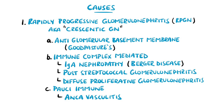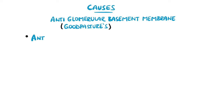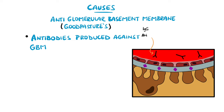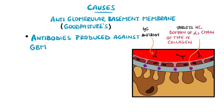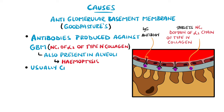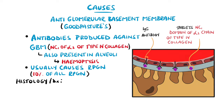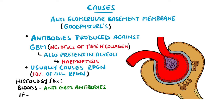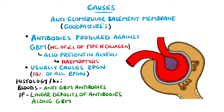In anti-glomerular basement membrane disease, also known as Goodpasture's disease, antibodies are produced that target the glomerular basement membrane — specifically the NC1 domain of the alpha-3 chain of type 4 collagen. These antibodies will also target the alveoli, as the same collagen is expressed there. Therefore, patients can also present with alveolar damage manifesting as haemoptysis. In most cases, anti-GBM goes on to cause rapidly progressive glomerulonephritis. For diagnosis, the antibodies can be found in the blood, and on immunofluorescence there are linear deposits along the glomerular basement membrane.